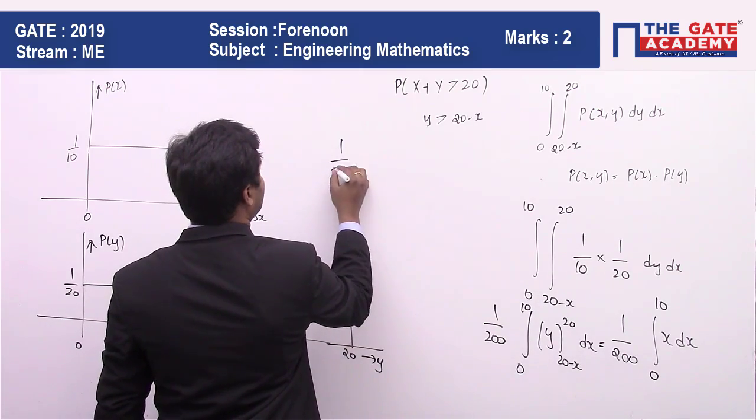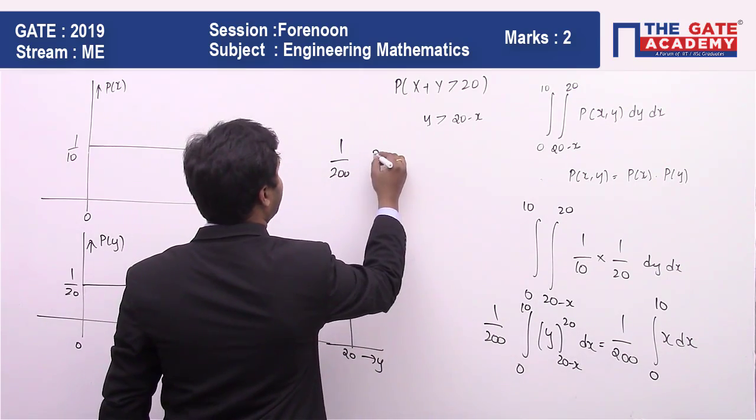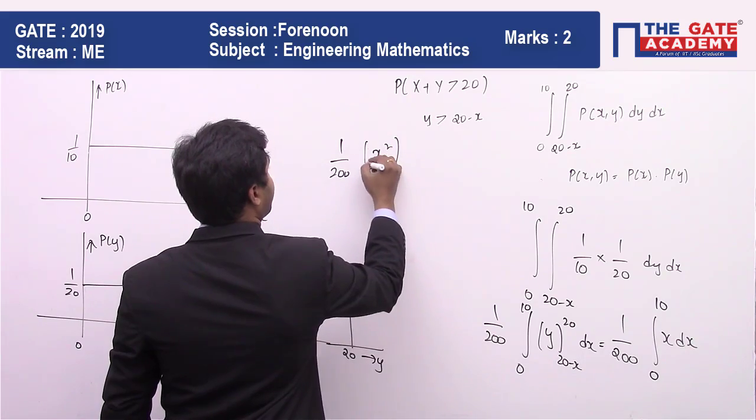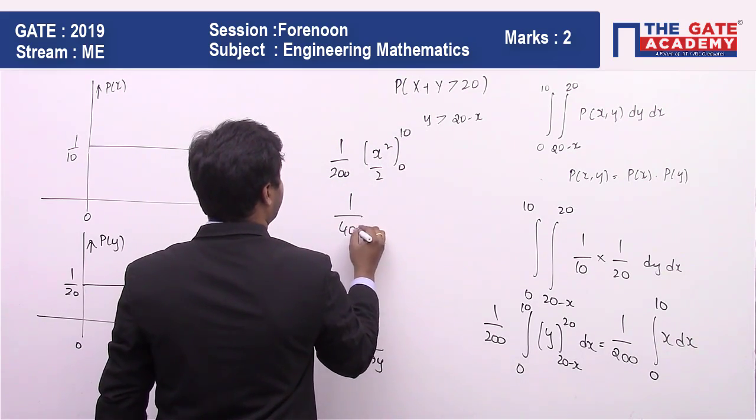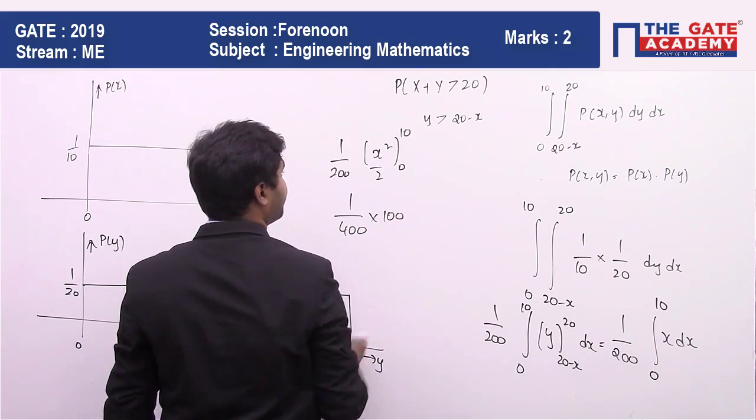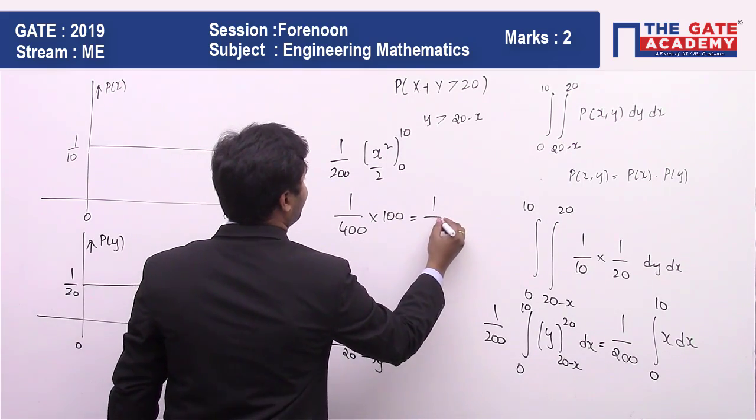So if I substitute it, 1 by 200 x squared by 2, 0 to 10, so it is 1 by 400 multiplied by 100, which is equal to 1 by 4.